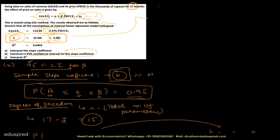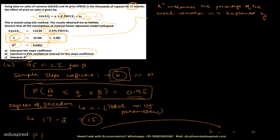In the last part, we interpret R-squared. R-squared is given as 0.6452. The general interpretation of R-squared is that it measures the percentage of the total variation in y explained by the regression model.